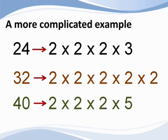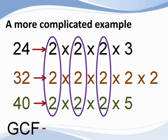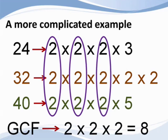The greatest common factor are the factors that are in common in all three lists. Two is in each of the three lists three separate times. Therefore, the greatest common factor is two times two times two, or eight.